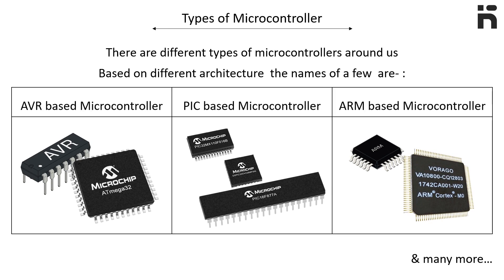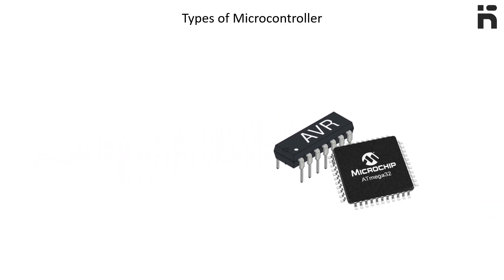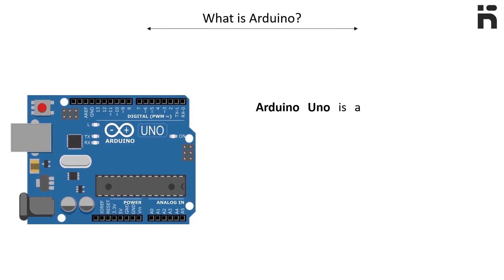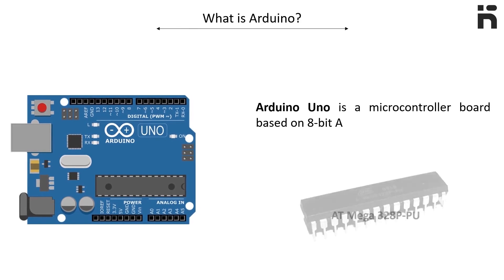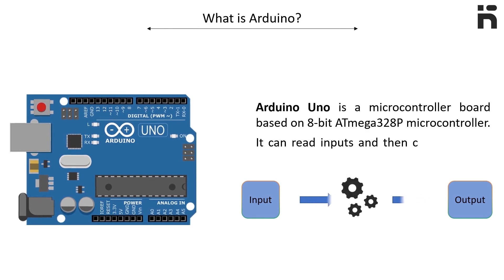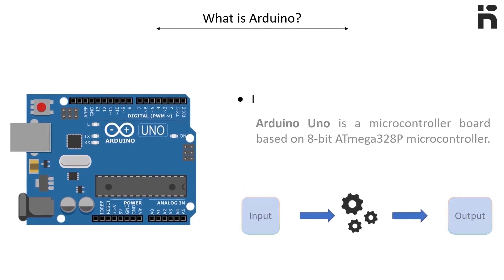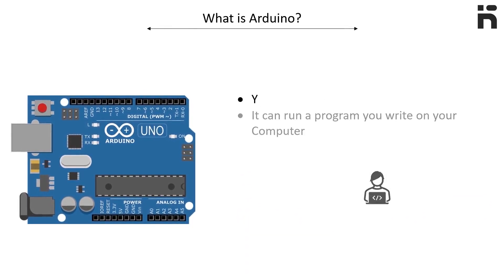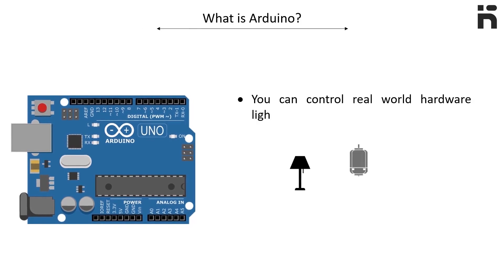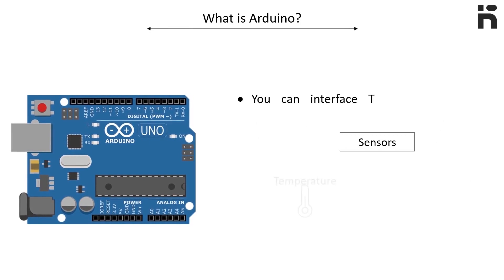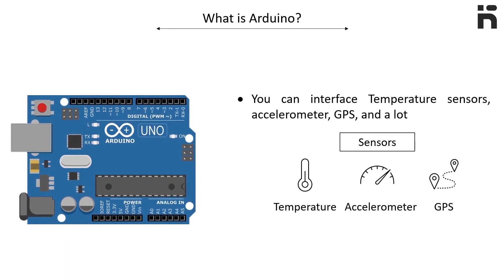Let us now discuss the Arduino microcontroller, launched by AVR. Arduino Uno is a microcontroller board based on the 8-bit ATmega328P microcontroller. It can read inputs and convert them into outputs, and can even run a program you write on your computer. You can control real-world hardware — lights, motors, and other computers — and interface temperature sensors, accelerometers, GPS, and a lot of other things.